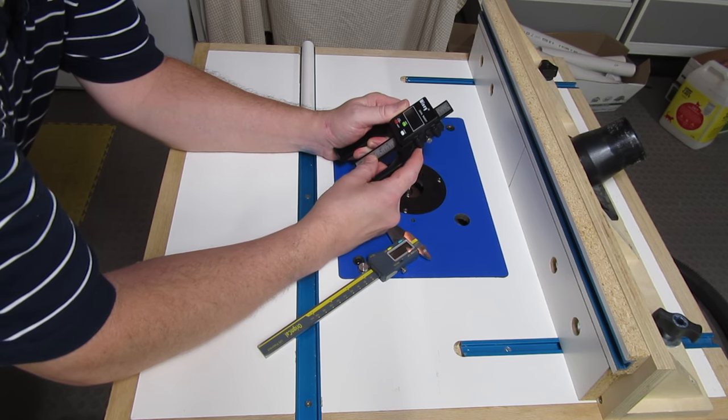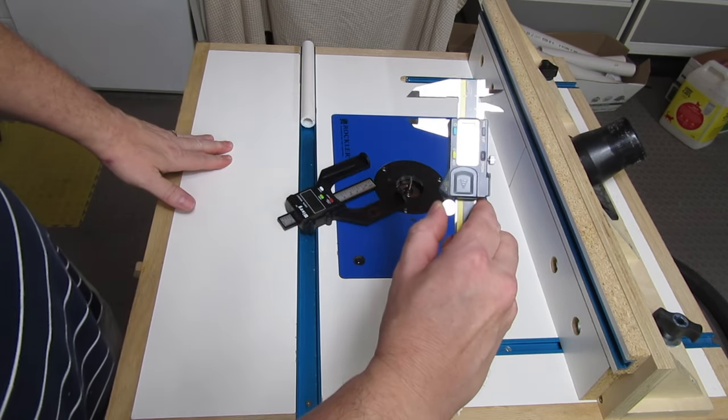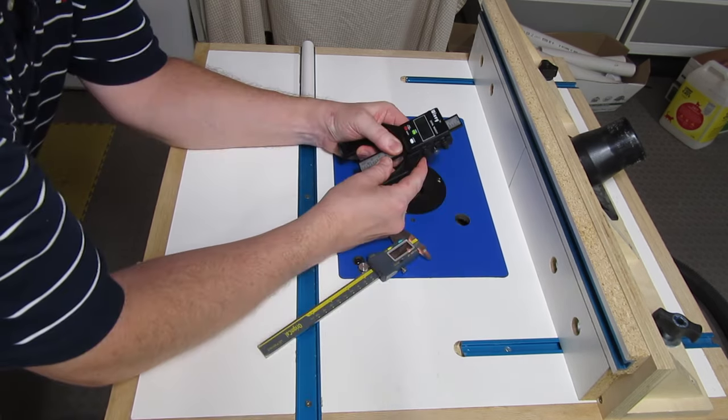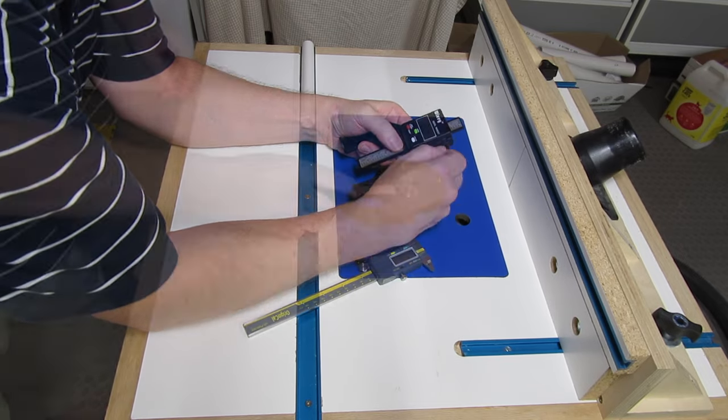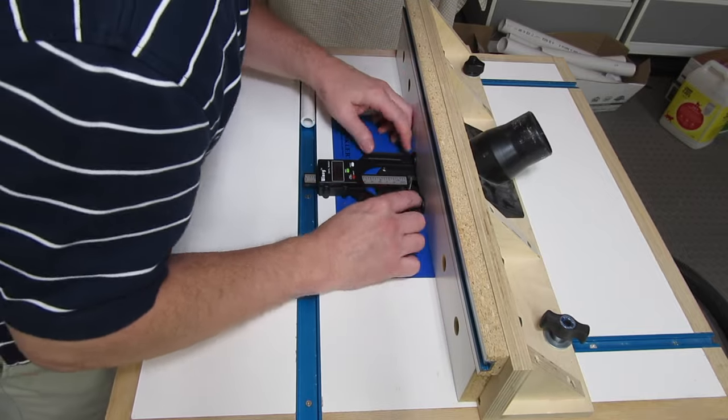This digital gauge is okay, but I really wish it had a thumb knob like my calipers do. It's hard to get exact, and it moves when I turn the lock screw. But eventually I get it right, and I use it to set the fence.